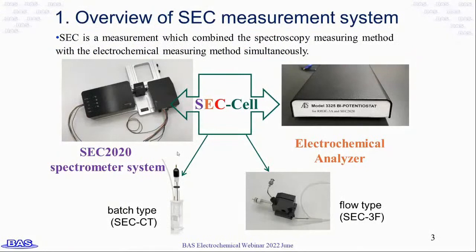First, let's look at the SEC measurement system. SEC is a measurement which combines spectroscopy with the electrochemical measuring method simultaneously. Techniques on which SEC is based are electrochemistry and spectroscopy. For measurement, we need a spectrometer system — this time we will use the SEC 2020 spectrometer system. We also need an electrochemical analyzer; here we use the model 3325 bipotentiostat. We also need a SEC cell to contain the solution and the electrodes.